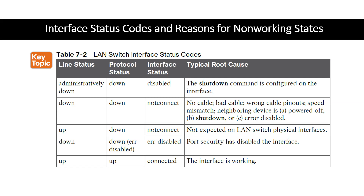We do have to do troubleshooting at CCNA, CCNP, and even the newer Cisco certification CCTS. You have to know what to look for. Interface status codes and the reasons why you would see a given code are key. Line status generally refers to Layer 1, and protocol status generally refers to Layer 2.